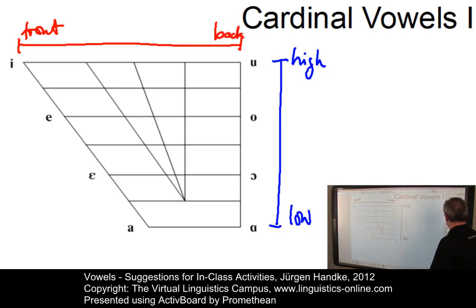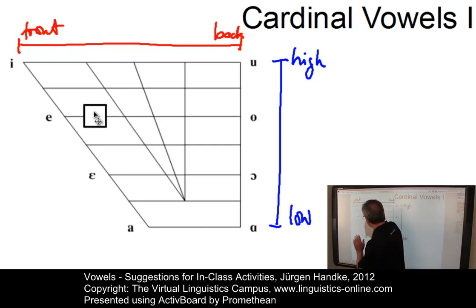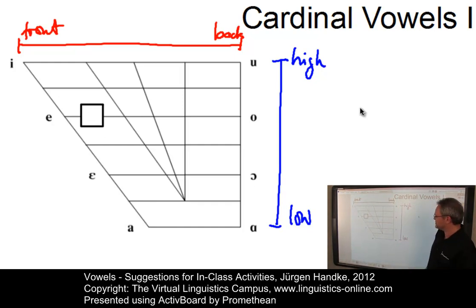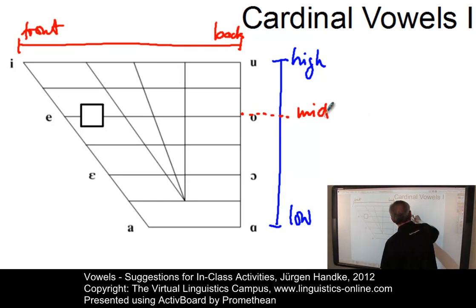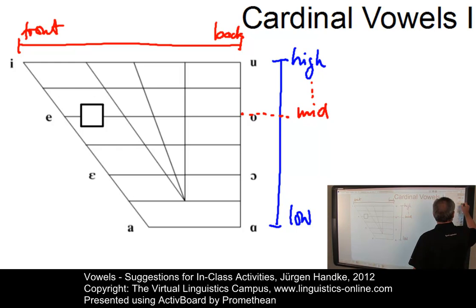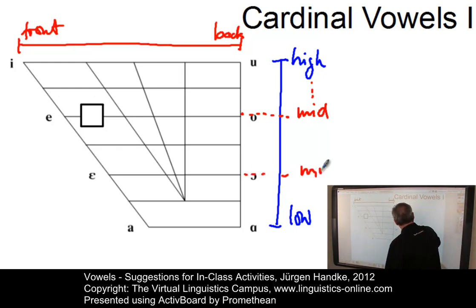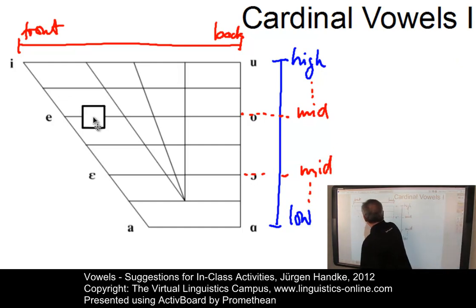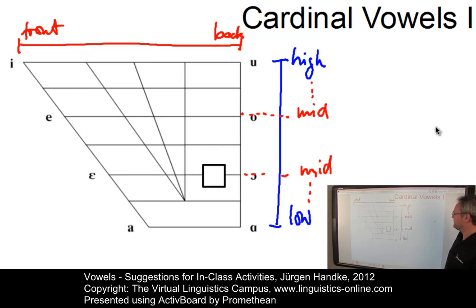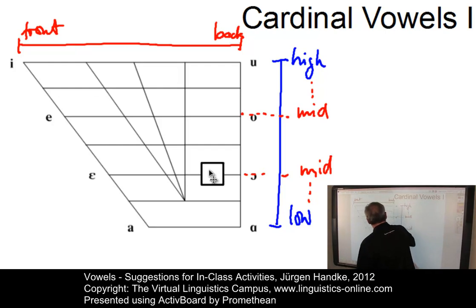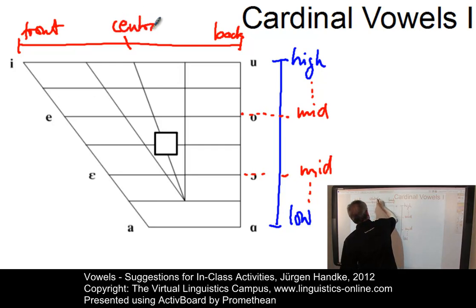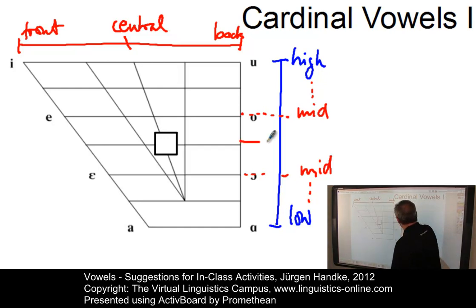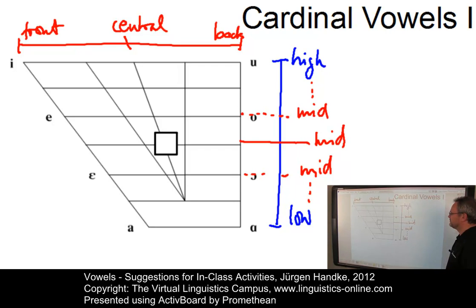Now you can interact with the students. Take an artificial vowel and move it around a little bit without using a symbol. Ask the students what it is and they would come up with an answer such as: this is a mid-high front vowel, because they would find out that here we have the mid-high position. And if you move the vowel elsewhere, they might say this is a mid-low back vowel, or discover the central position, defining it as a mid-central vowel.